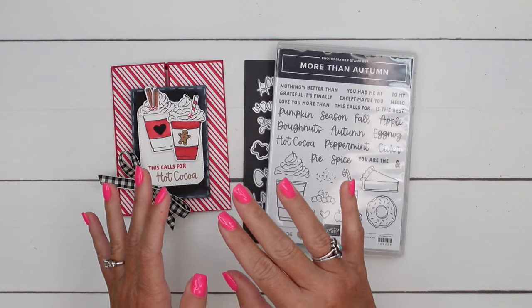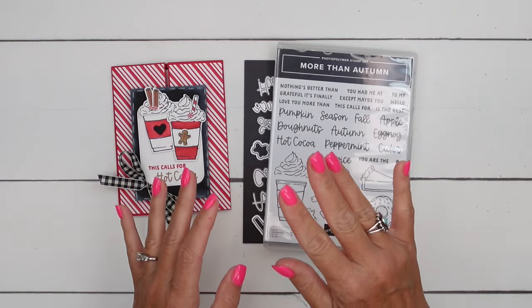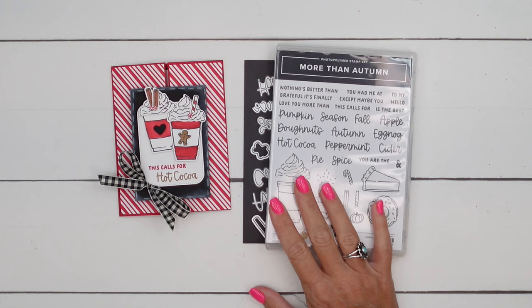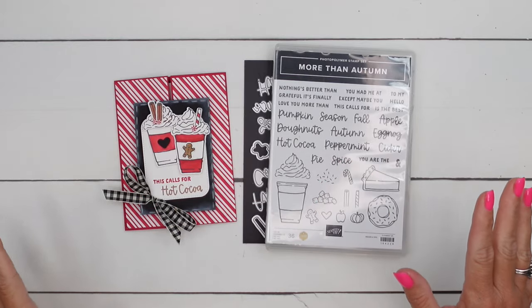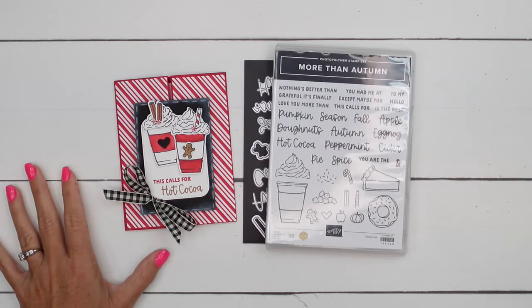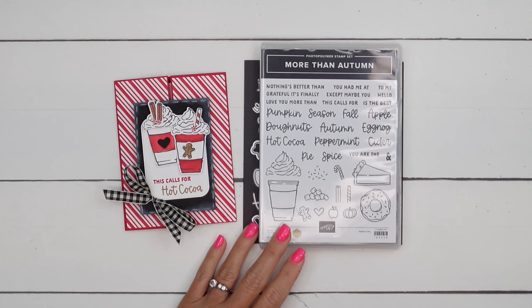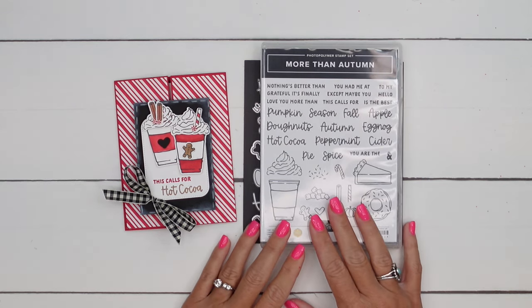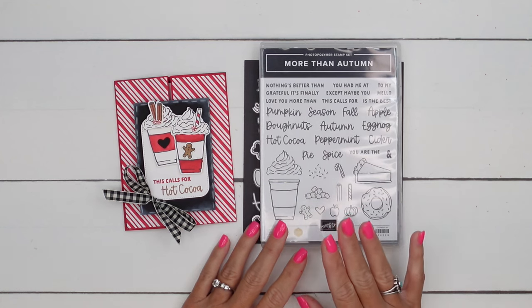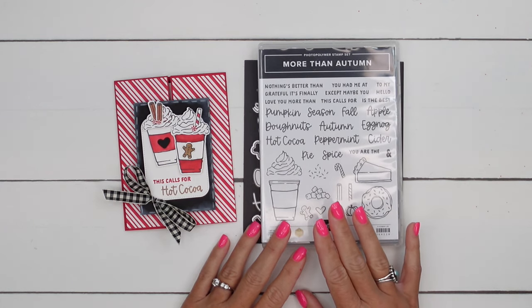It's actually called the September to December 2024 Mini Catalog. This is my favorite bundle from that catalog. I've just scratched the surface with all of these stamps that you can use and it's really a fun one. Make sure you click the link here on YouTube, go back to my blog. I'll have a lot of projects to show you.